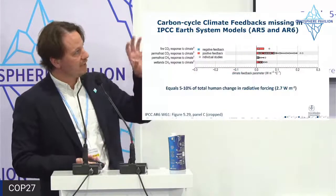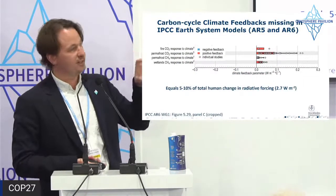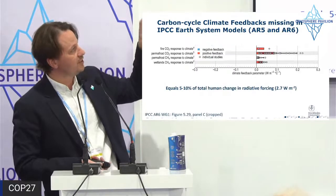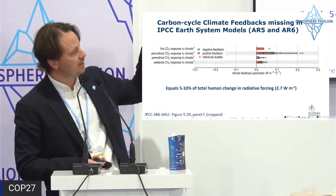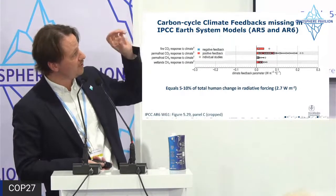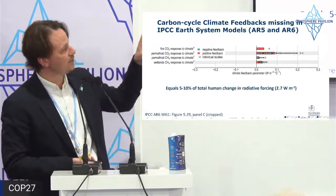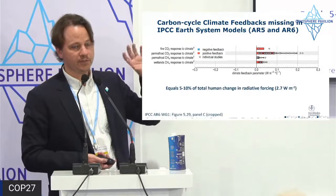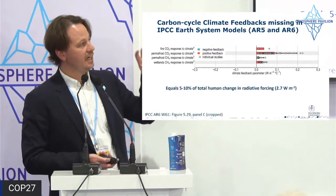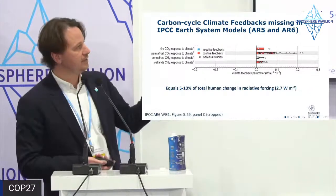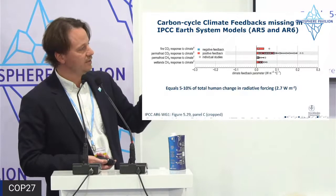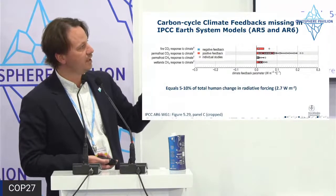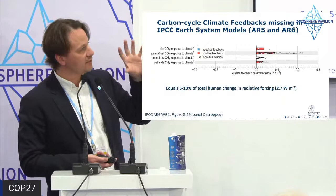There are carbon cycle climate feedbacks not included in Earth system models: fire response to climate, permafrost response to climate, and wetland response to climate. The IPCC acknowledges these feedbacks are missing and tries to account for them in other ways. Taken together, these equal roughly 5–10% of total human radiative forcing of 2.7 watts per square meter observed so far.